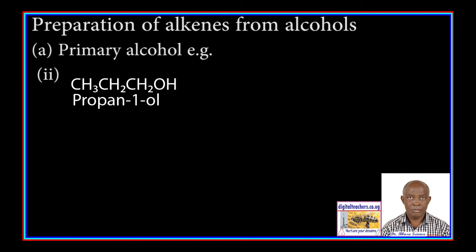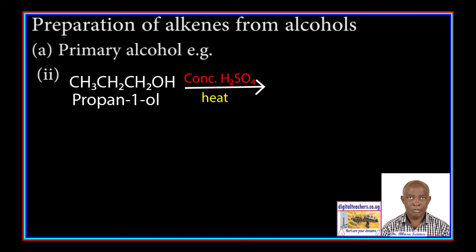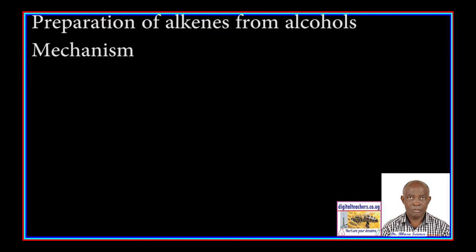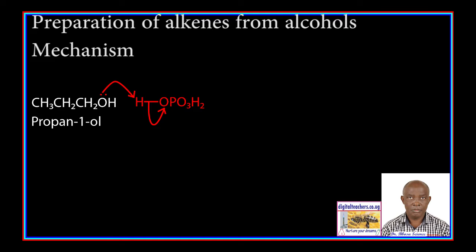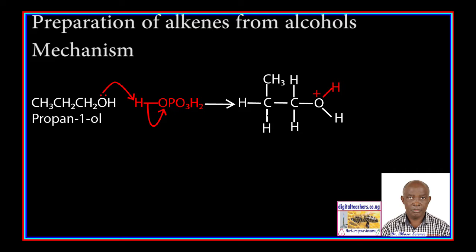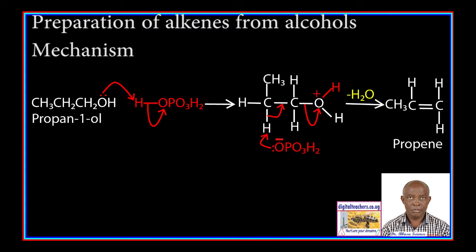Example 2: propan-1-ol reacts with concentrated sulfuric acid to form propene. In the mechanism, propan-1-ol picks a proton from phosphoric acid to form a protonated propan-1-ol and a phosphate ion. The phosphate ion picks a proton from a carbon atom next to the one carrying the OH group as the bond between the carbon atom and the protonated OH group breaks to form propene. Note that the double bond forms concurrently as the bond between the carbon and OH group breaks.